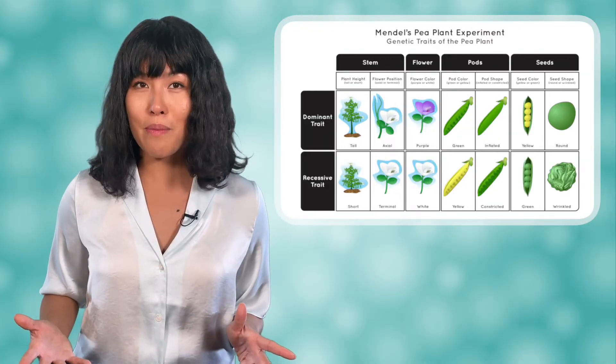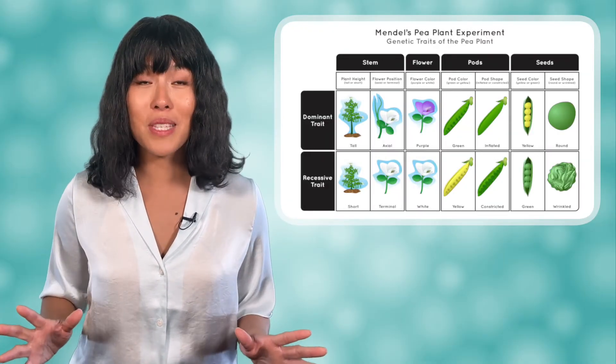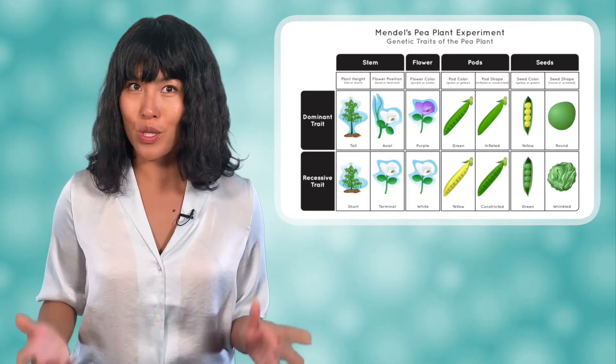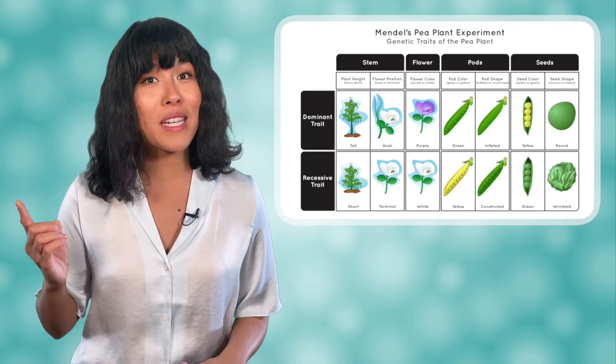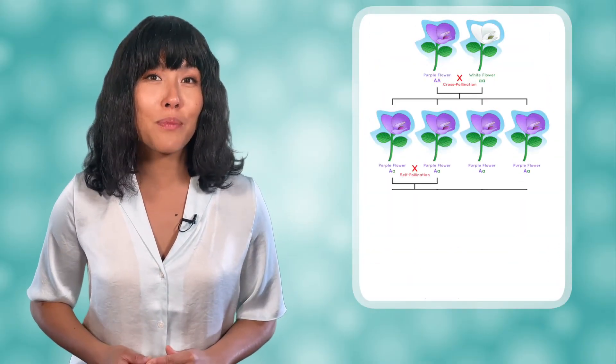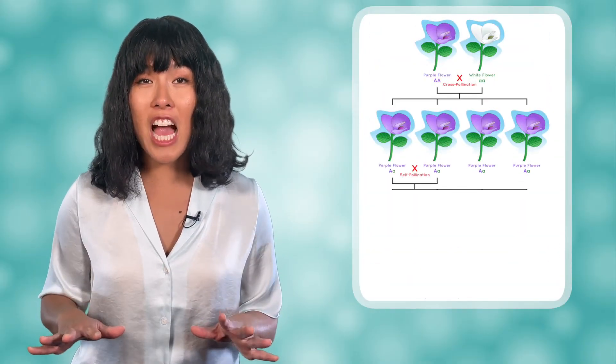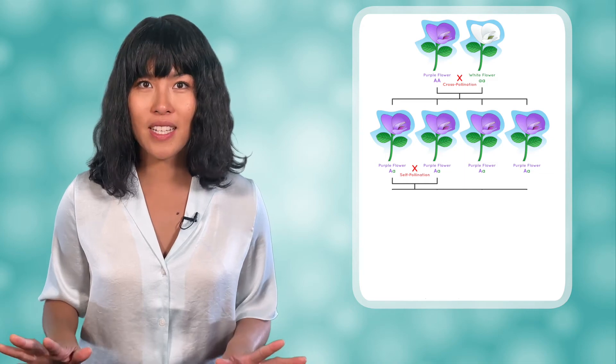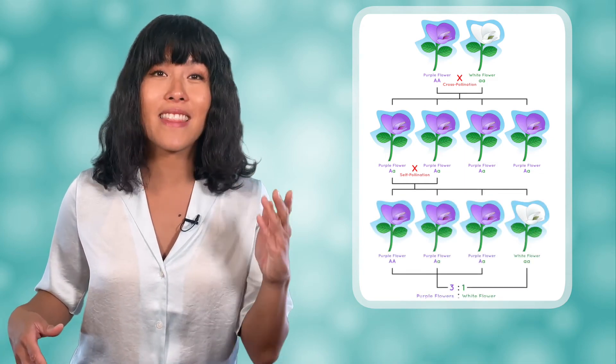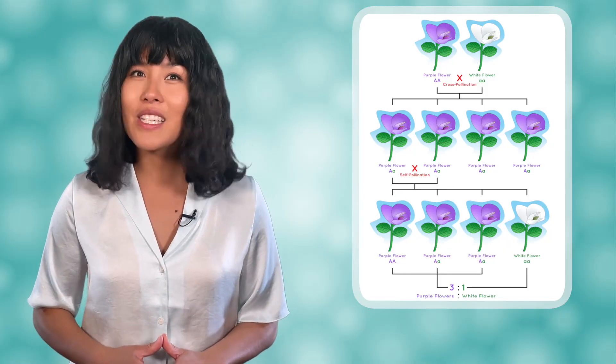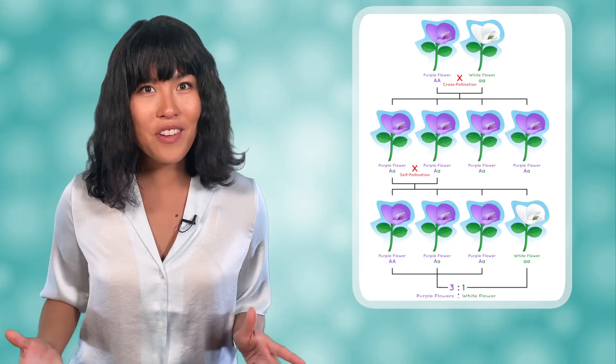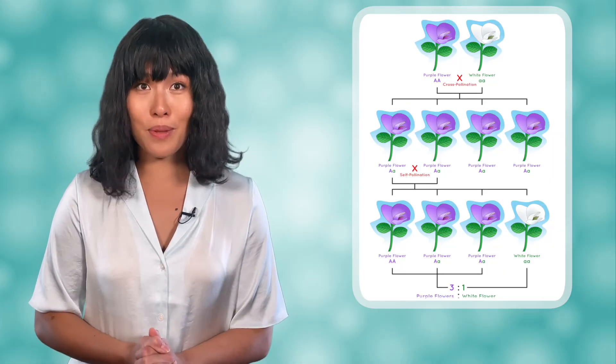Mendel repeated the experiment we looked at hundreds of times, studying different traits, but always found the same results. One trait was dominant and the other was recessive. So when he crossed two purebred plants, the first generation had only the dominant trait. But then a few plants with the recessive trait would show up again in the second generation.